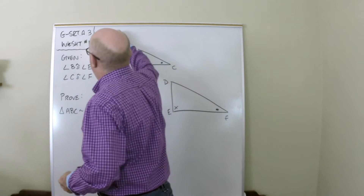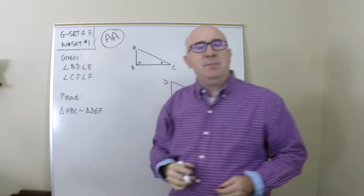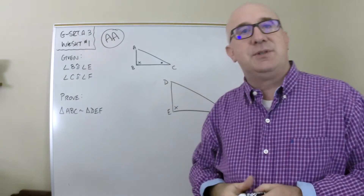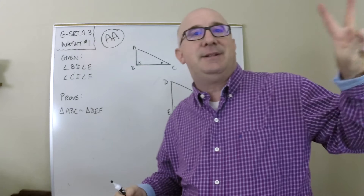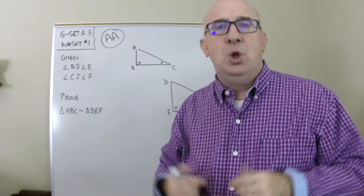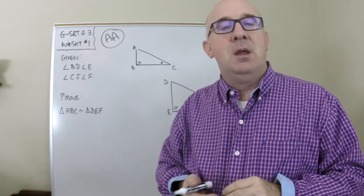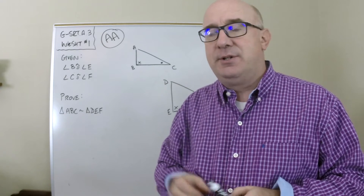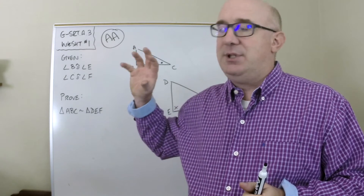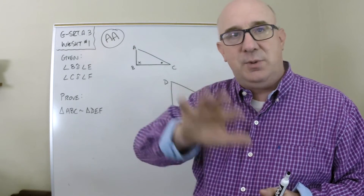The one we're about to prove is AA — Angle-Angle. What we mean by that is: if I have two angles in one triangle and the same two angles in another triangle, would they have to be similar? To be similar, you have to establish that there can be similarity transformations between the two shapes.